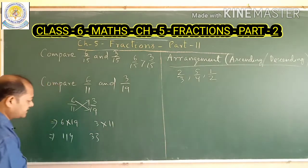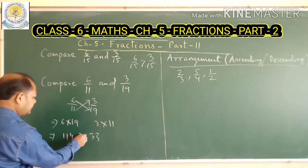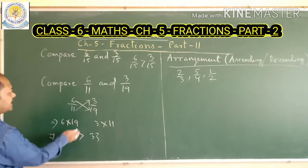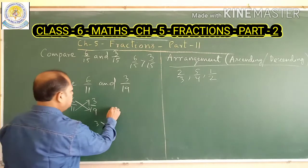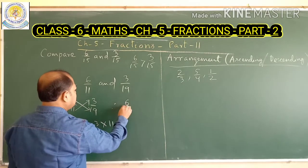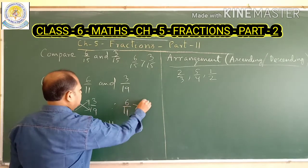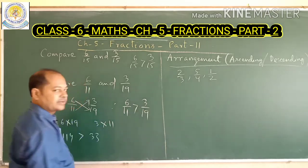So which is greater? Definitely 114 is greater, and 114 is on the left side. Therefore, we conclude that 6 upon 11 is greater than 3 upon 19.